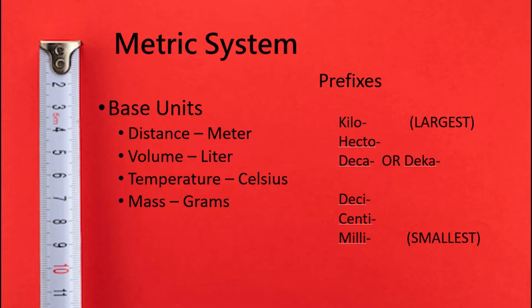We can add prefixes if the increment is really large or if it's really small. We have a couple of common prefixes: kilo, hecto, deca — and you'll see two spellings, though most commonly it's d-e-c-a — then deci, centi, and milli. Milli is our smallest. These are just a few of many; you may have heard of giga, micro, or macro, which are also prefixes, just not as common in basic science class.